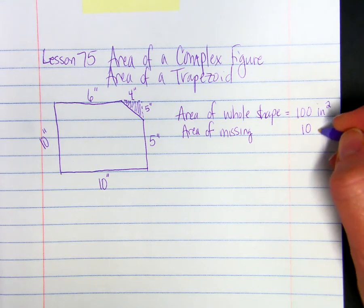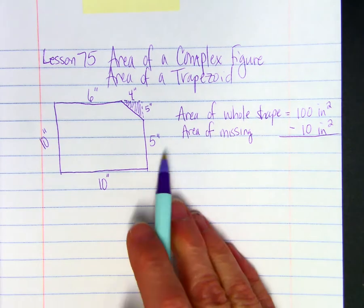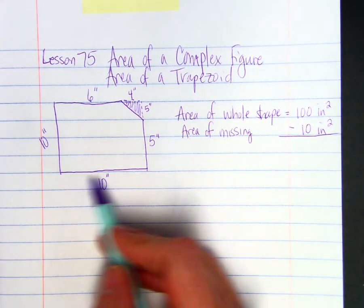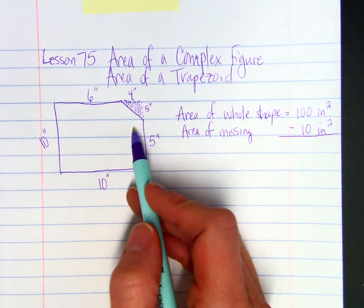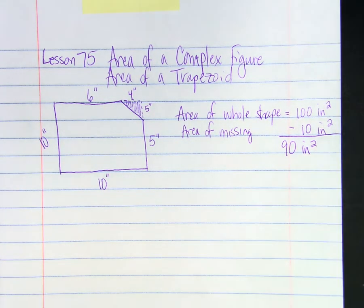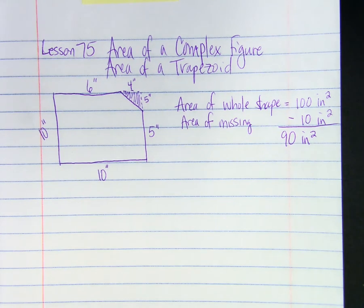which is 10 inches squared. And we subtract, then we know the area of the part that's not missing, this pentagon, would be 90 inches squared. Okay, so you can subtract areas of missing parts to find complex figure areas.